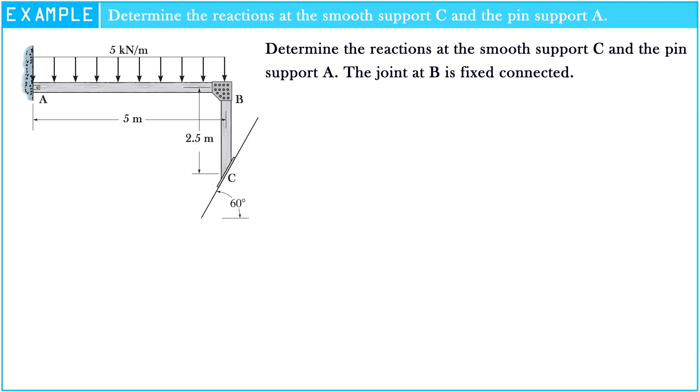Look at the figure of the problem. The frame is connected by a joint at B. There is a uniform distribution load of 5 kN per meter on AB, and at C there is an incline at 60 degrees.